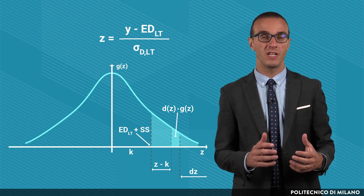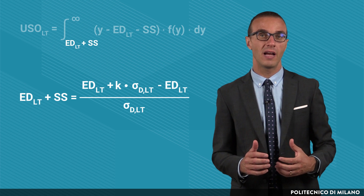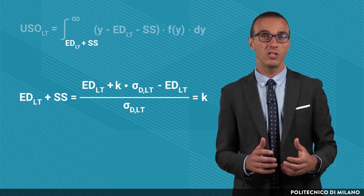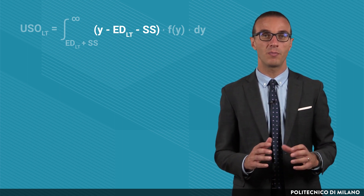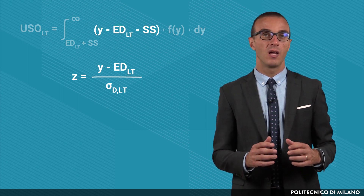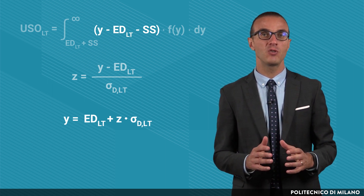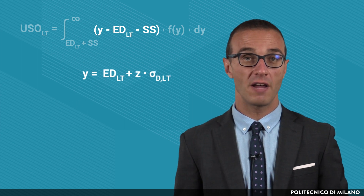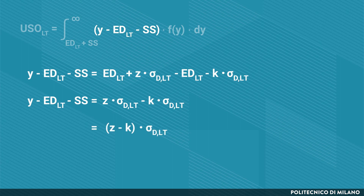Third, since there is a stockout only when the actual demand Y is higher than the reorder point, we integrate the found function from the reorder point to infinity. The following step consists in switching the function of the demand to a standard normal distribution. This can be done by subtracting the average value — the expected demand during the lead time — and dividing by the standard deviation of the demand during the lead time. In order to standardize the lower limit of the integral, the safety stock should be expressed as the product between the value K and the standard deviation of the demand during the lead time. While standardizing the normal distribution, the expression becomes exactly equal to K. Standardizing the actual demand Y, the result becomes the sum between the expected demand during the lead time and the product of the new variable Z and the standard deviation, so the expression between parentheses becomes Z minus K, multiplied by the standard deviation during the lead time.